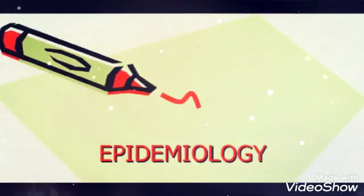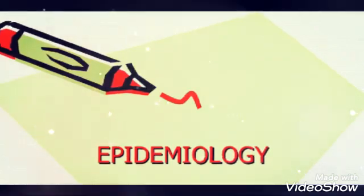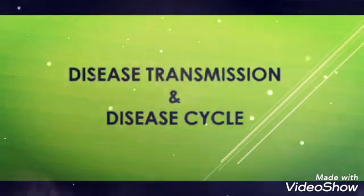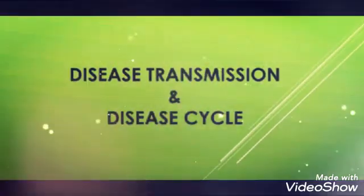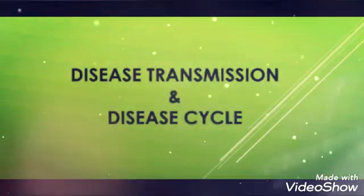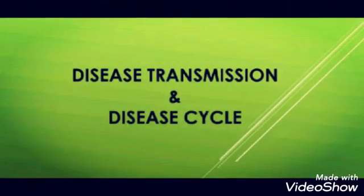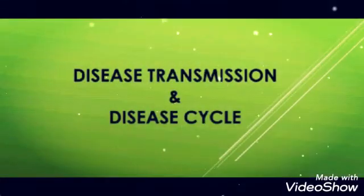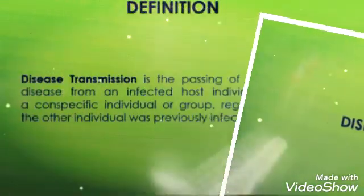Good morning students. We are on the continuation of the same unit, that is epidemiology, and today's topic is disease transmission and disease cycle. Disease transmission means how the disease gets transferred from one person to another, and disease cycle means how long it takes to grow and get transmitted from person to person, or from a person to other materials or objects. Let's see the definition.